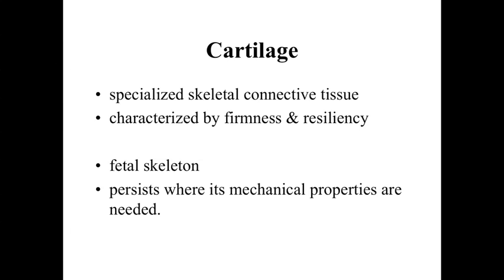Cartilage is basically a specialized skeletal connective tissue. Like other types of connective tissue, it's composed of cells — in this case cartilage cells — with an intervening extracellular matrix. The characteristics of that extracellular matrix give cartilage its overall characteristics, generally defined as having firmness and resiliency. It has some strength but is still a little flexible, is capable of rapid growth, but still has a lot of support mechanisms in place.